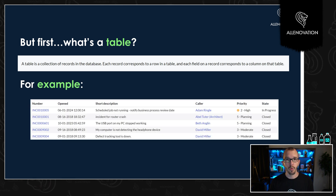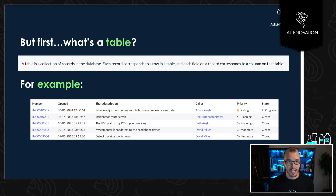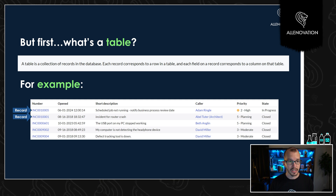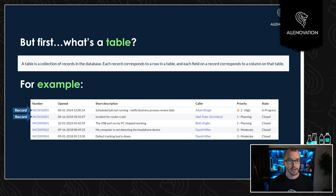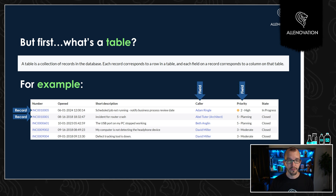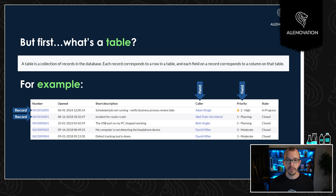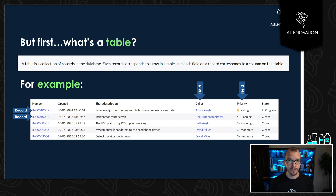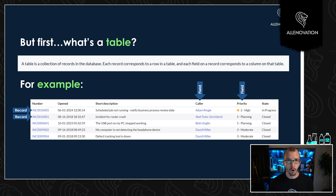For example, this is a screenshot of a list of incident records in a ServiceNow environment. On the left-hand side you're going to have your records — incident 1005, 10001, etc. You have your other items in the columns; these are your fields. So when it was opened, the short description, the caller, the priority — all of those things are fields. These records and fields really all live in harmony on a table within ServiceNow. That's where all the records live.